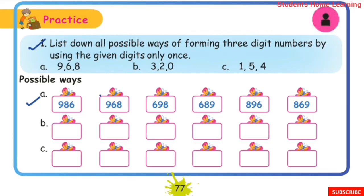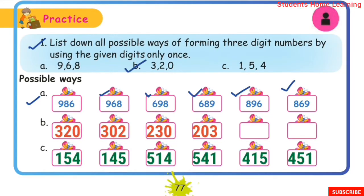The 3-digit number combinations include: using the digits in different arrangements such as 457, 475, 547, 574, 745, and 754. Similarly for digits 1, 5, 4 the arrangements are: 154, 145, 514, 541, 415, 451. Each digit is used exactly once in each number.